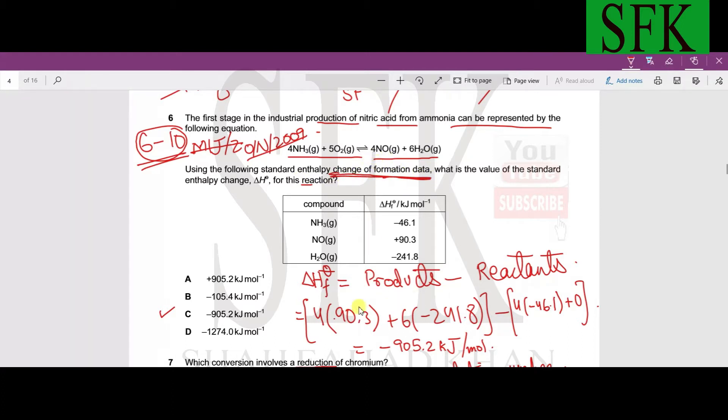Whenever formation data is given we can directly use the formula of products minus reactants. What is the value of the standard enthalpy change for this reaction? Products minus reactants would mean the sum of enthalpy changes of all the products multiplied by their moles minus the sum of enthalpy changes of all the reactants multiplied by their moles.